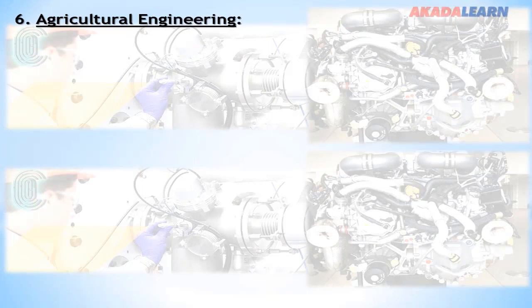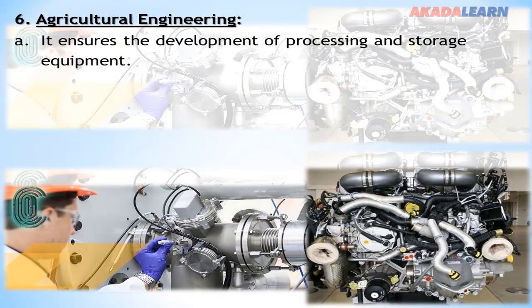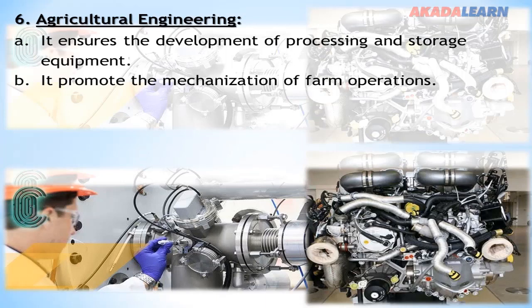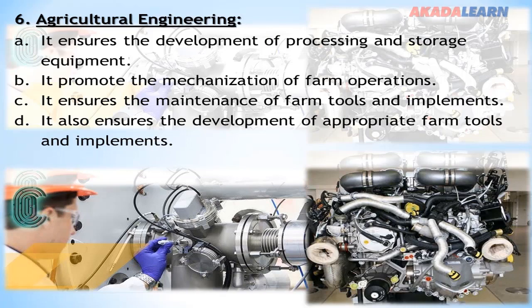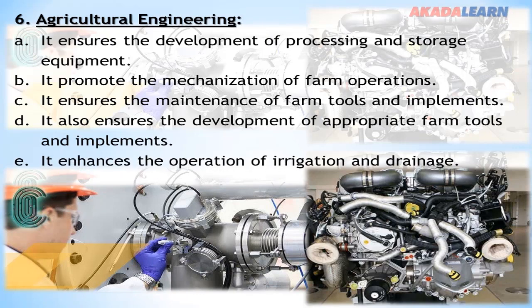Agricultural Engineering: Agricultural engineering ensures the development of processing and storage equipment. It promotes the mechanization of farm operations, ensures the maintenance of farm tools and implements, and ensures the development of appropriate farm tools and implements. It also enhances the operation of irrigation and drainage.